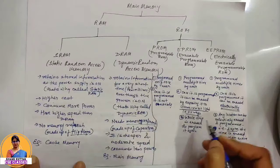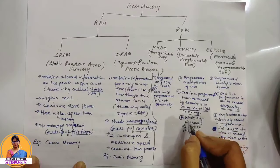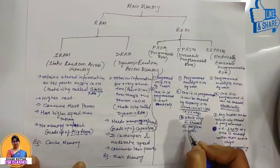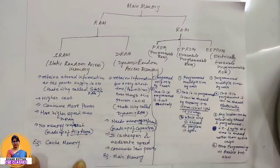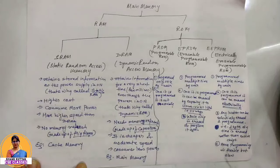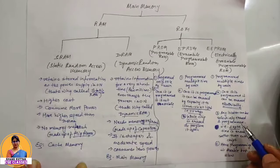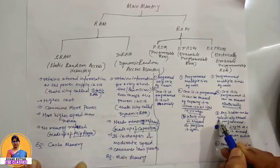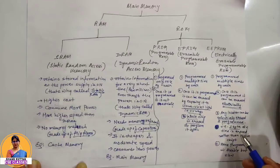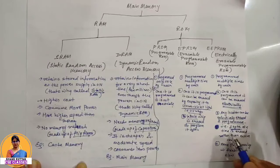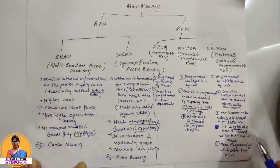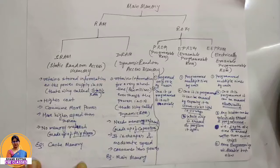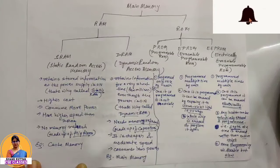EEPROM (Electrically Erasable Programmable ROM) is the most advanced version. It can also be programmed multiple times, but it is erased electrically using electrical signals. The key difference from EPROM is that in EEPROM we do not have to erase the whole chip — we can erase one byte or one block at a time, rather than the entire chip. Therefore, the programming is more flexible, though it is slower. This is the difference between SRAM, DRAM, PROM, EPROM, and EEPROM.